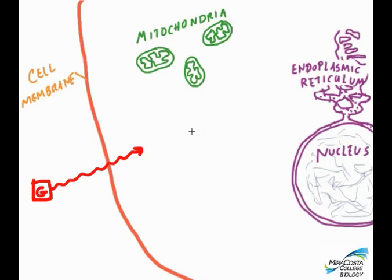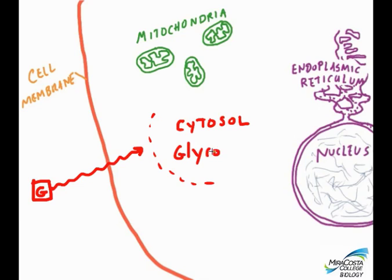What happens during glycolysis is entirely taking place in the cytosol, which is the part of the cytoplasm that's outside of the nucleus as well as the membrane-bound organelles like the mitochondria. So in this picture, glycolysis is happening here in the cytosol—inside of the cell but outside of the mitochondria.